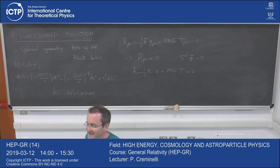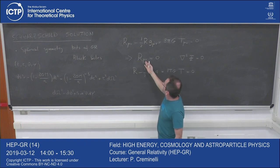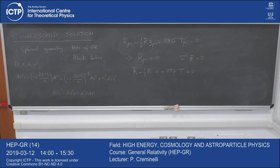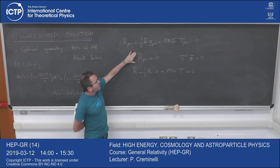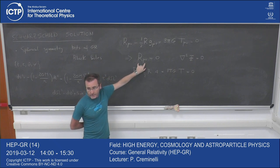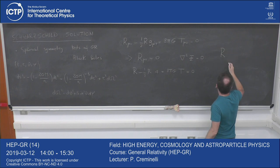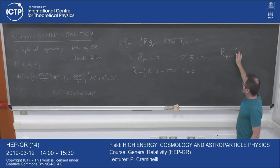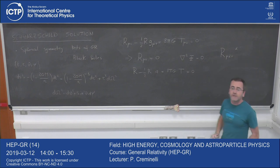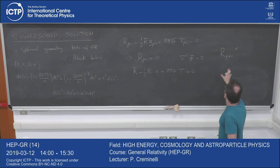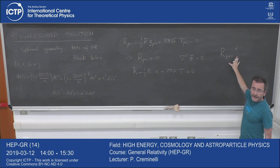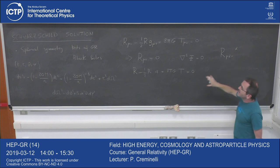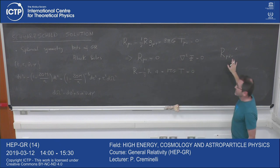Does setting the Ricci tensor equal to zero mean this metric is flat? No. The Ricci tensor is a partial trace of the Riemann tensor. The Riemann tensor contains all the information about the curvature of spacetime. A spacetime is flat only if the full Riemann tensor in all its components is equal to zero. Since the Ricci tensor is a partial trace of the Riemann tensor, the fact that it is zero does not imply that the full Riemann tensor is zero.